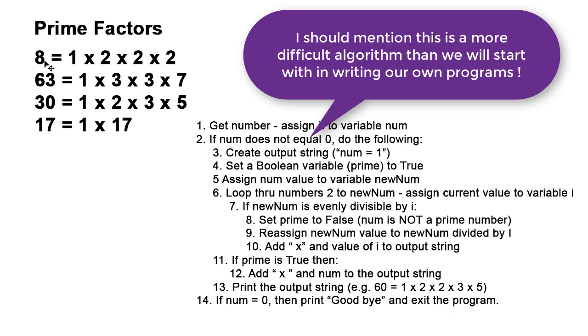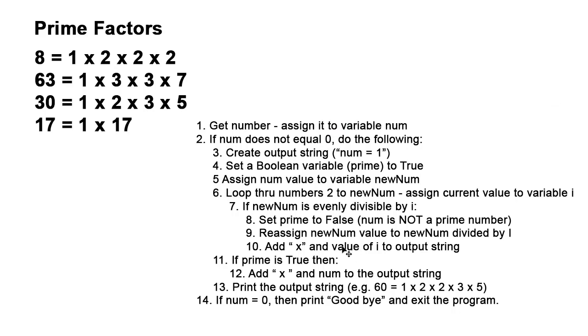And I'm going to add x and the value of i to the output string. So in the case of 8, we had our initial output string of 8 equals 1, and here I'm going to add the x and the 2 through the loop.